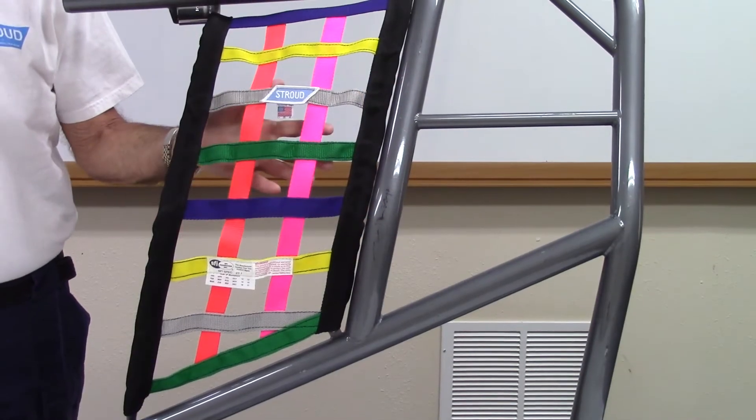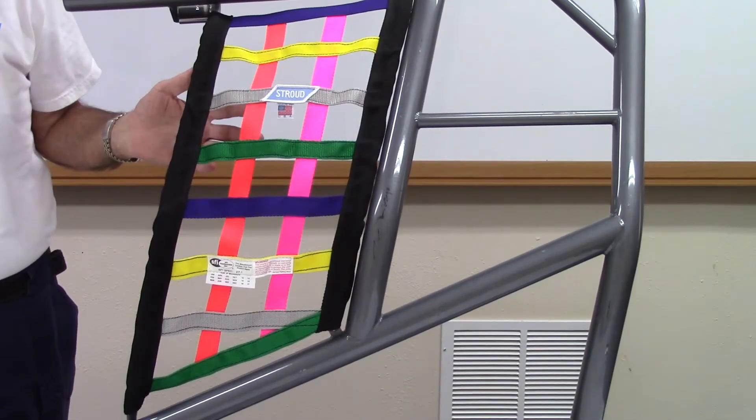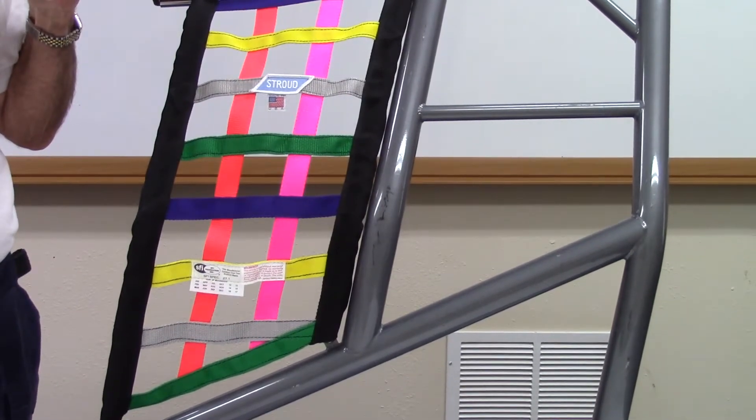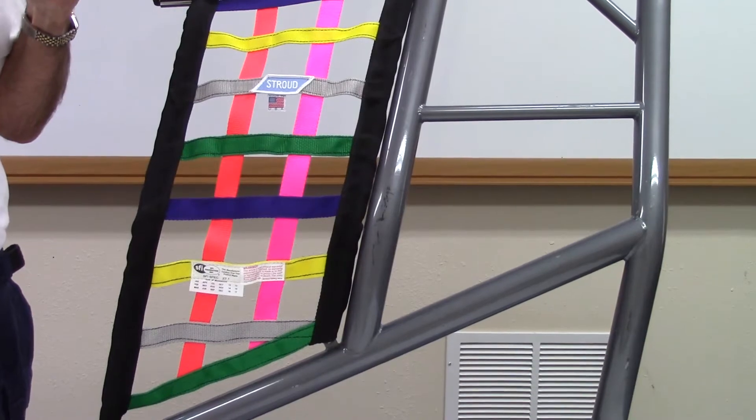Window and door nets have been designed for all types of motor sports with the sole purpose of keeping a driver's arms, legs, and body within the confines of the roll cage during an accident.